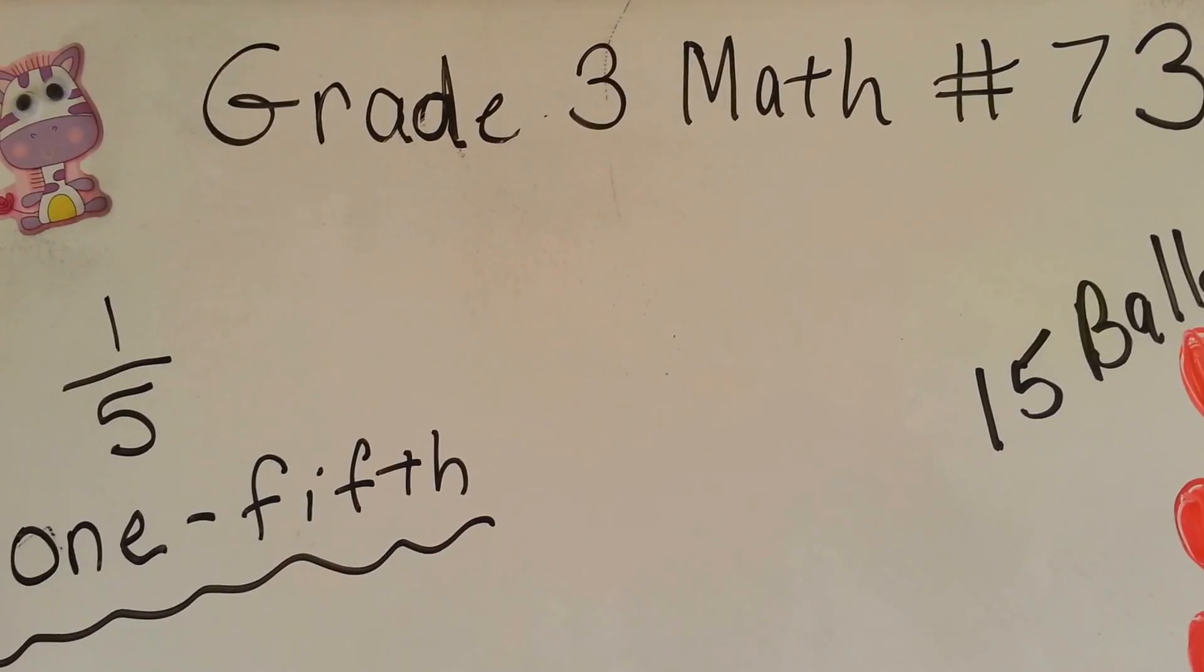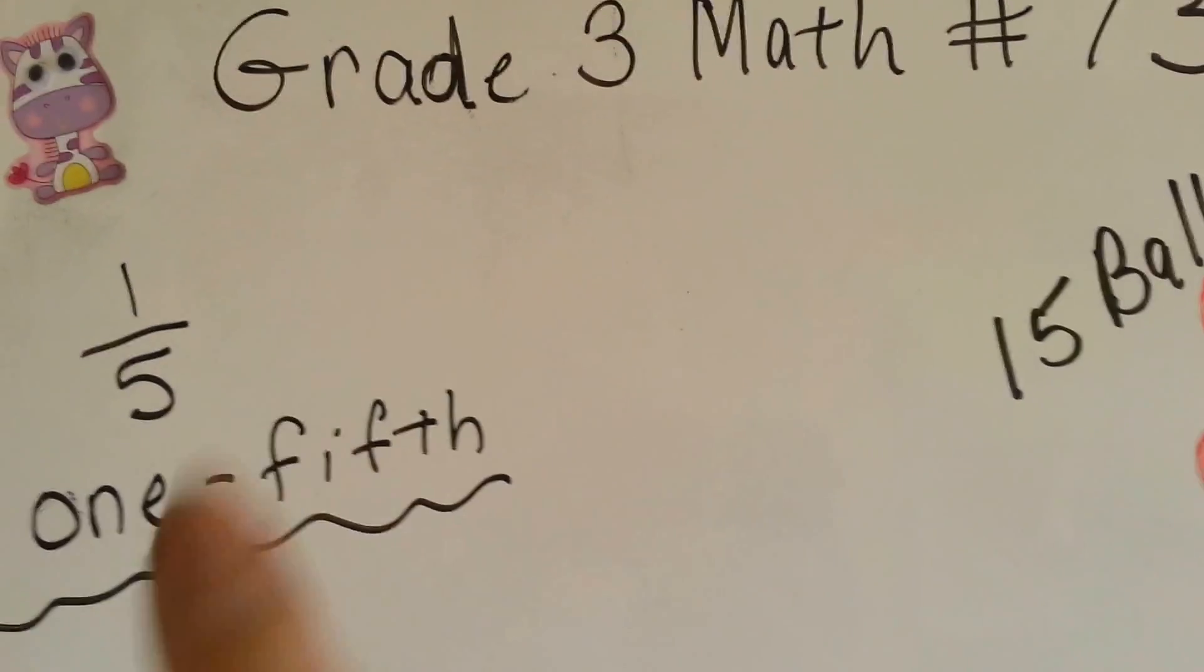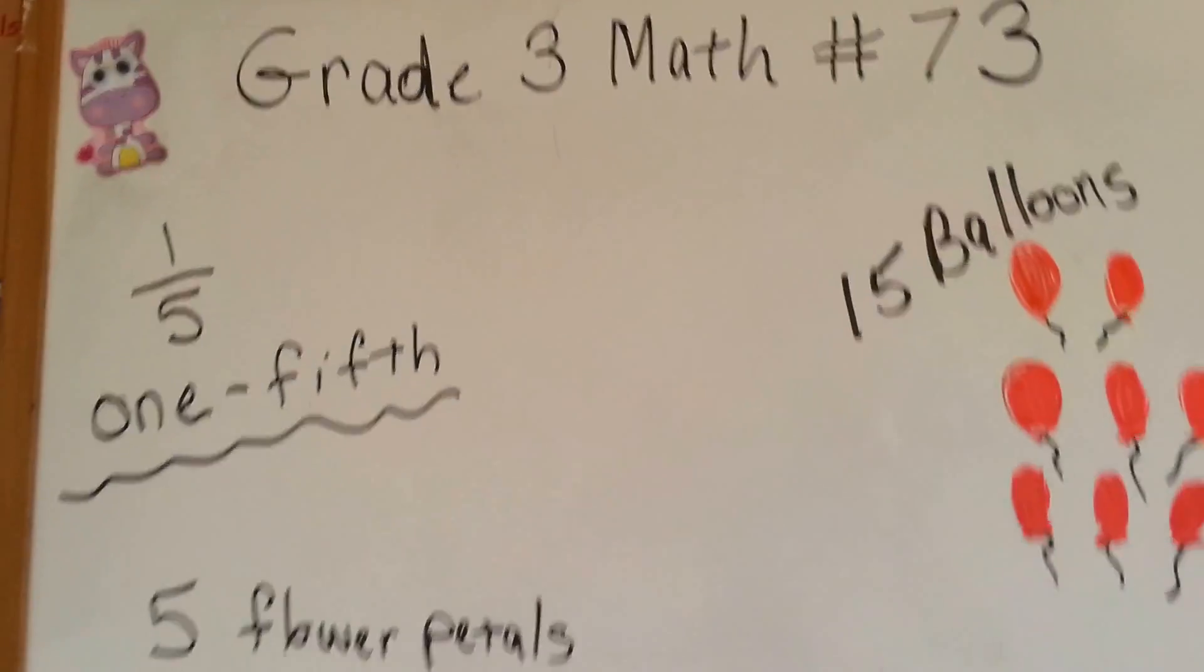Grade 3 math number 73. One-fifth. We're going to talk about one-fifth.